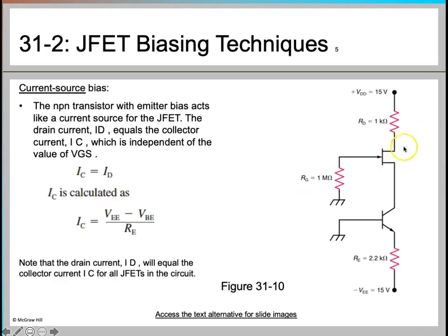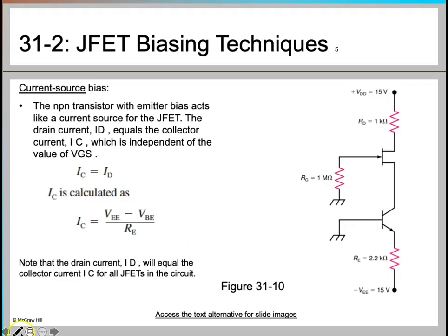In the example circuit, VDD is connected, RD is one kilohm, gate resistance is one megaohm, emitter resistance is 2.2 kilohms, and the emitter voltage VEE is 15 volts. The NPN transistor with emitter bias acts like a current source for the JFET. IC equals ID, and IC is calculated using the KVL equation in the emitter loop.